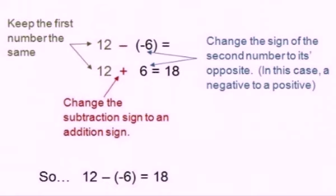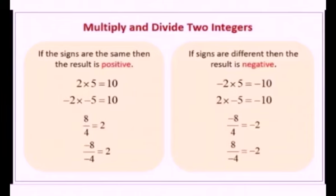In the rule of subtraction, always remember: if a minus sign comes before a bracket, we change the sign inside. If both signs are different, we write minus. In this example, 12 minus bracket minus 6 — we change the sign, so we write plus 6. Keep the first number the same: 12 plus 6 equals 18. So students, always remember: if before the bracket the sign is negative, and the sign inside is negative, then positive times negative is negative, giving a negative result. But if both signs are the same, the result is positive. So 12 plus 6 equals 18.